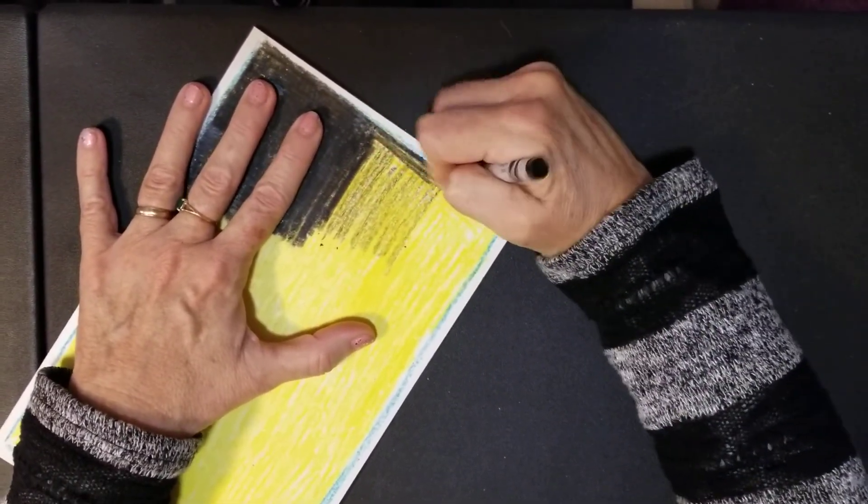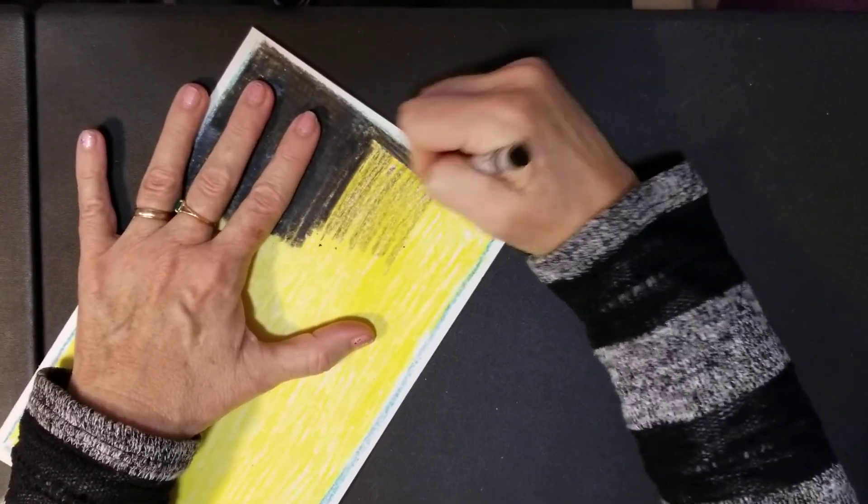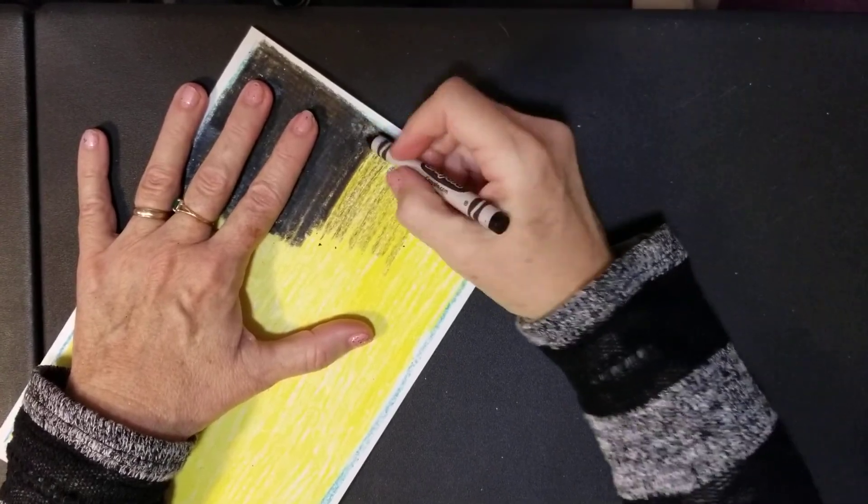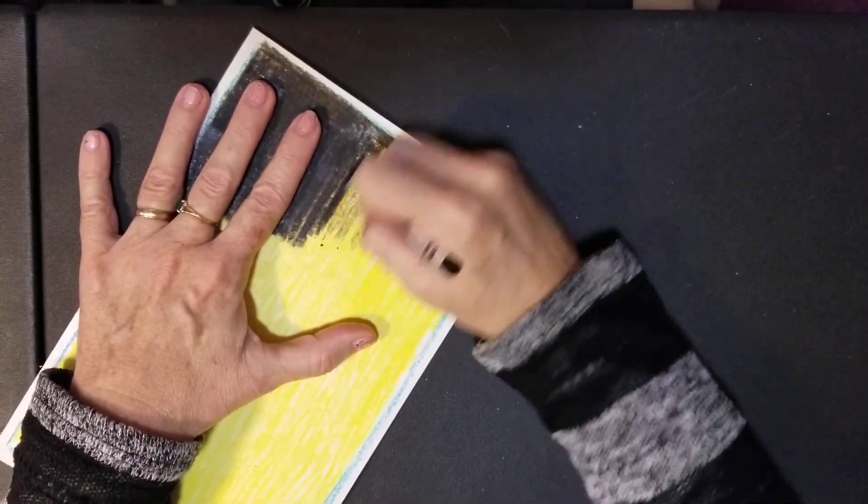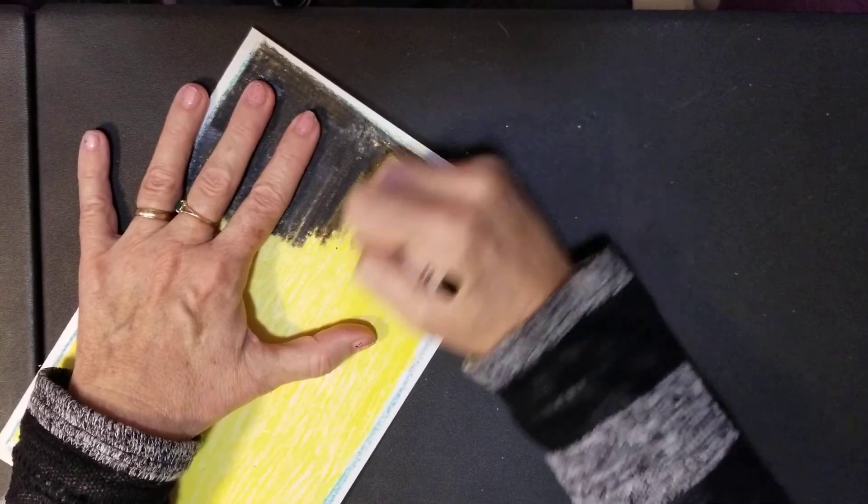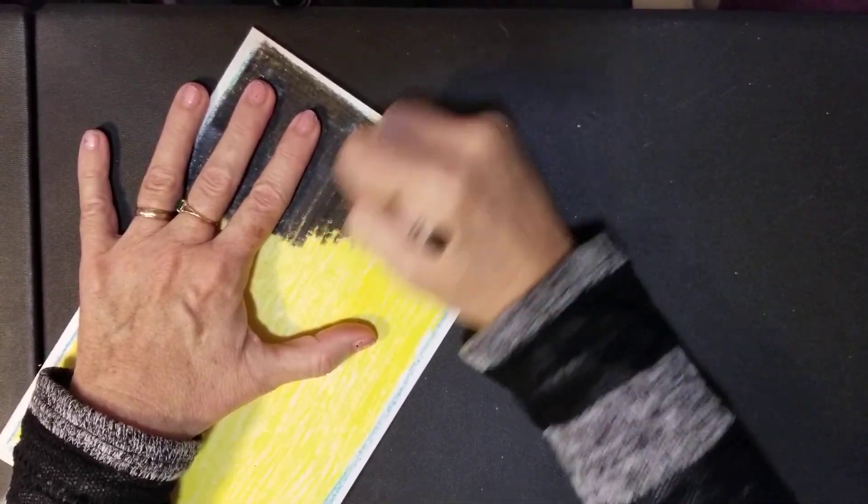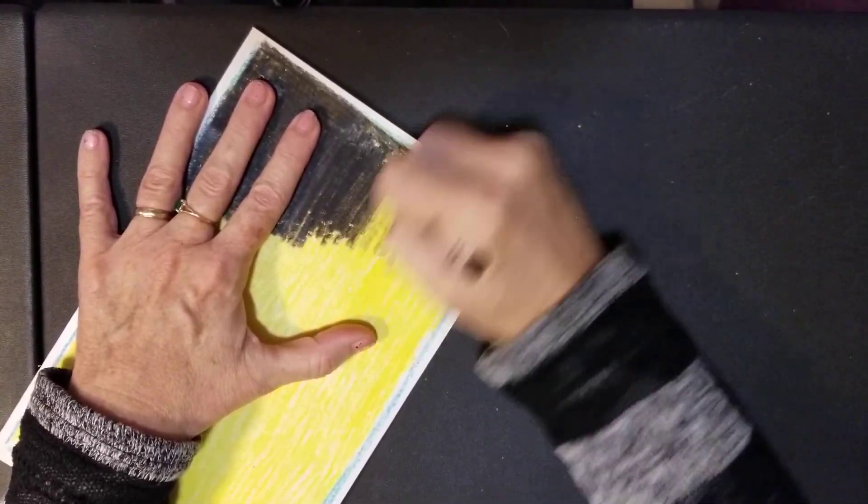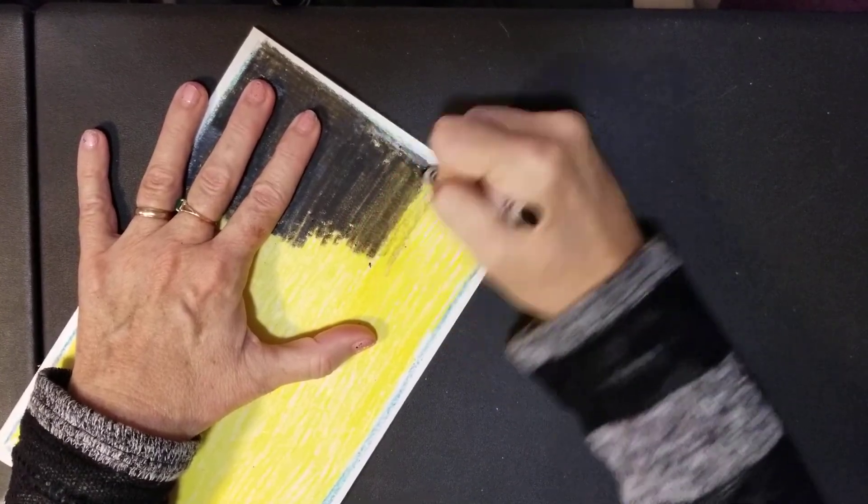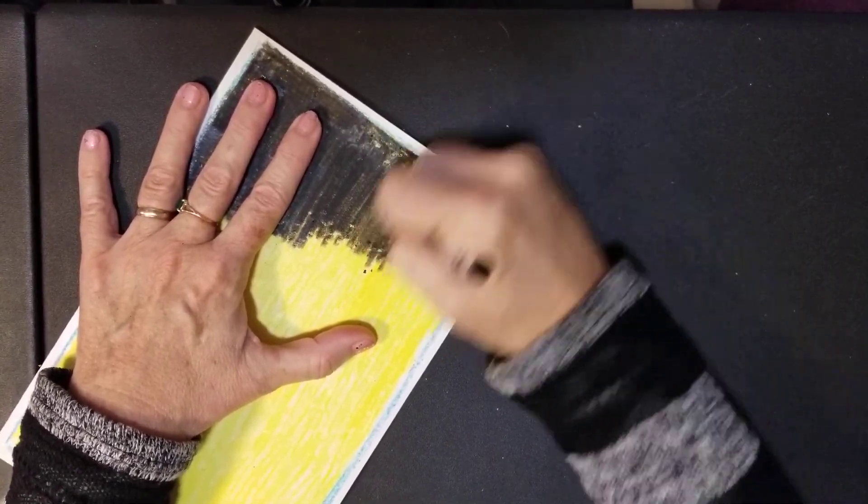I'm going to go along the edge, not all the way out because I don't want to scribble on my table, but almost to the edge. Now I'm pressing really hard right over top and getting a nice dark, waxy black.